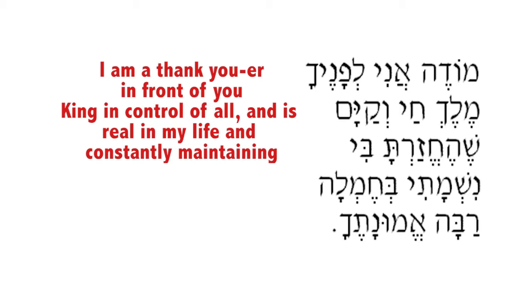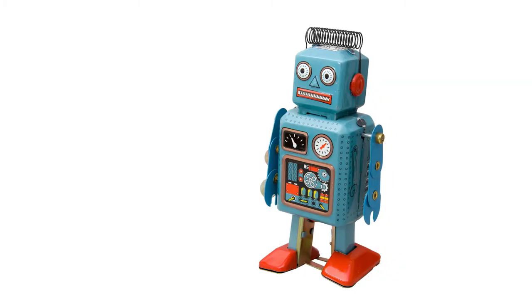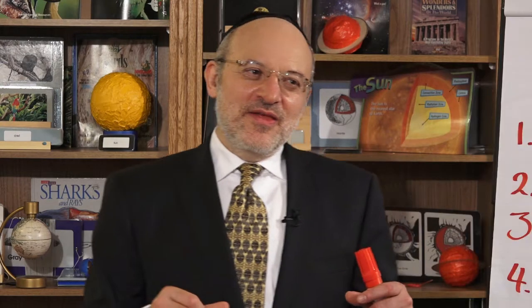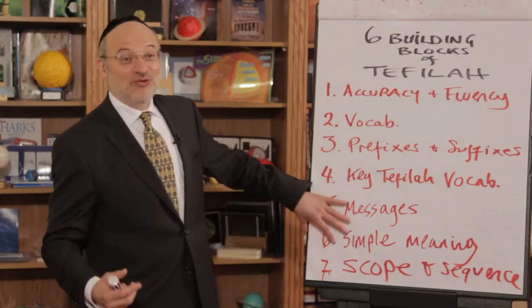Chai means alive, v'kayam means constantly maintaining - Hashem is m'kayem the whole universe constantly for me to serve Him. So chai - Hashem, you are real, you're alive in my life. What am I thanking you for? Shehechezarta bi - You returned it in me. Help the kids come to this: what are we grateful for when we wake up? Eventually they'll arrive at - we're grateful for our neshamah. For younger children, use the mashal of a battery: put a battery in a toy and it runs beautifully; take the battery out and it's dead, doimem.